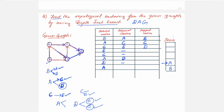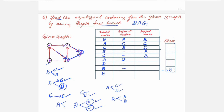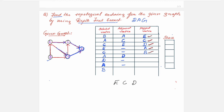Next in the stack is A, with the stack pointer pointing to A. We select A and check its adjacent vertices. A has neighbors C and D — both already visited — so we put a dash and pop A, placing it in the popped vertex column. Next, the stack pointer points to B. We select B and check its neighbors: A and D — both already visited. So we pop B and place it in the popped vertex column. The popped vertex column now reads: E, C, D, A, B.